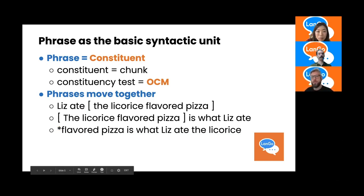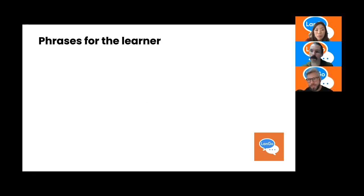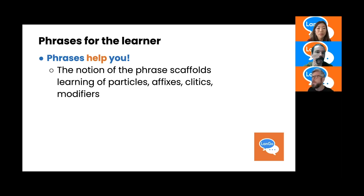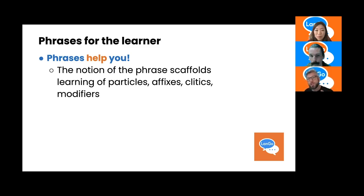Why should the language learner learn anything about phrases? The notion of the phrase scaffolds the learning of particles, affixes, clitics, and modifiers at the minimum. They're all part of the phrase oftentimes and are different kinds of levels of attachment — morphological items with different levels of attachment that typically don't stand on their own outside of a phrase. We've already seen affixes in 'cat'/'cats': that plural S is a suffix, which is a kind of affix.